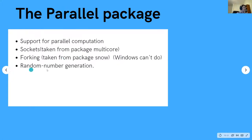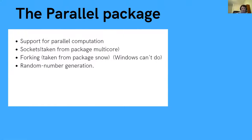The parallel package also enables random number generation, which isn't something I'll cover today, but it's something to keep in mind. For example, when you set a seed and you're doing random numbers, how does that work when you're running it on multiple clusters? Does each have the same seed and produce the same random numbers? That's a more advanced topic but important to at least mention.